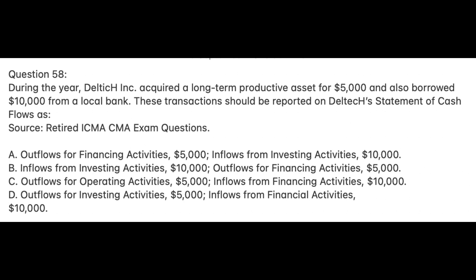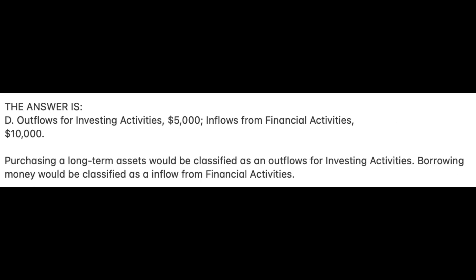Question 58. During the year, Deltach Inc. acquired a long-term productive asset for $5,000 and also borrowed $10,000 from a local bank. These transactions should be reported on Deltach's statement of cash flows as: A. Outflows for financing activities $5,000; inflows from investing activities $10,000. B. Inflows from investing activities $10,000; outflows for financing activities $5,000. C. Outflows for operating activities $5,000; inflows from financing activities $10,000. D. Outflows for investing activities $5,000; inflows from financing activities $10,000. The answer is D. Purchasing a long-term asset would be classified as an outflow for investing activities. Borrowing money would be classified as an inflow from financing activities.